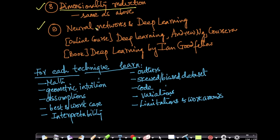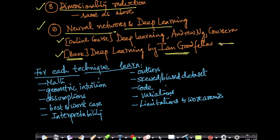One of the hottest areas in machine learning today is Neural Networks and Deep Learning. For this, there is a very popular online course called Deep Learning by Andrew Ng at Coursera. I also love the book Deep Learning by Ian Goodfellow — one of my favorite books I've read recently. I've read it since it was in preprint. It's a heavy book but worth reading if you have the bandwidth.